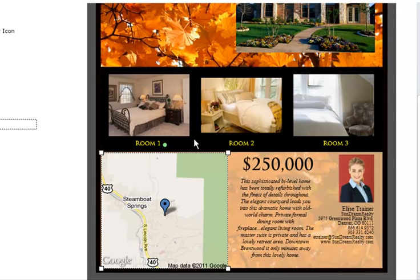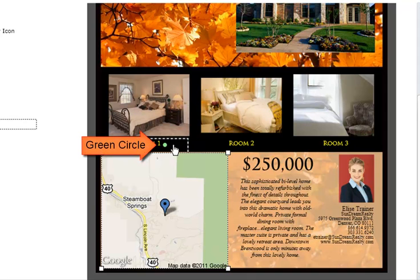To rotate your Google map, select your map and move your cursor over the green circle located at the top of your map. Your cursor will change from an arrow to a round arrow. You can then click and drag the circle to rotate your map around a central pivot point.